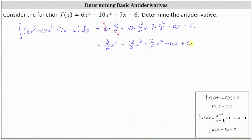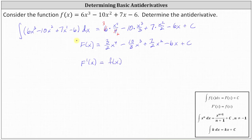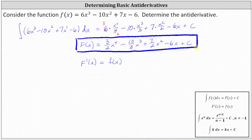The antiderivative is often referred to as big F(x), where big F(x) represents the family of functions whose derivative is equal to the given function f(x), or in the form of an indefinite integral, the integrand function. We can always check our antiderivative — if we differentiate big F, we should get the given function f(x). So the antiderivative is F(x) = 3/2 x⁴ - 10/3 x³ + 7/2 x² - 6x + c.